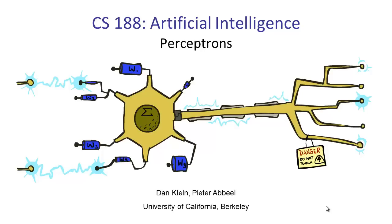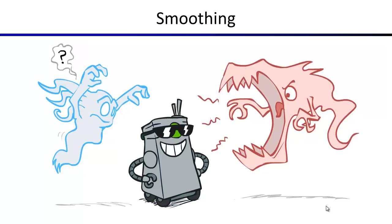Today we're going to continue talking about machine learning and mostly focus on a classification method called the perceptron, which is also used as a building block for other approaches. First I want to quickly revisit what we talked about at the end of last class — generalization and overfitting — where we were classifying using naive Bayes. We saw that if you take probabilities directly from the data using maximum likelihood estimates, you can get bad performance.